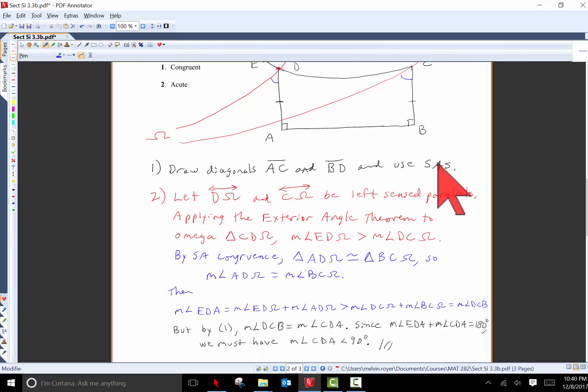Now by part one DCB and CDA are congruent to each other. But if I look over here at point D, EDA plus CDA form a straight line and so their measures add to 180 degrees. Now, EDA is greater than DCB and DCB is equal in measure to CDA. So I have two terms adding to 180. Therefore, the larger of the two terms is greater than 90 and CDA, which is the smaller of the two terms, has to be less than 90. And that does that.